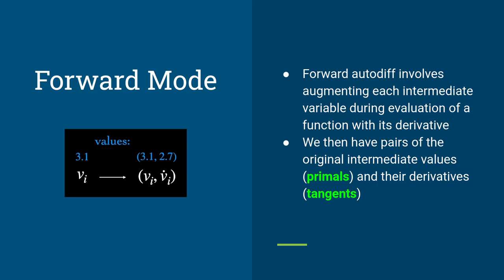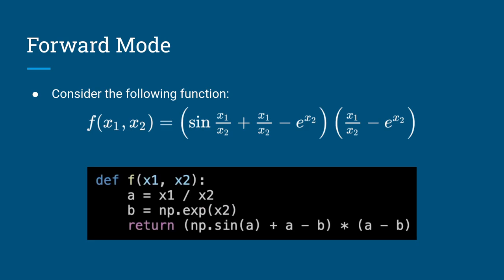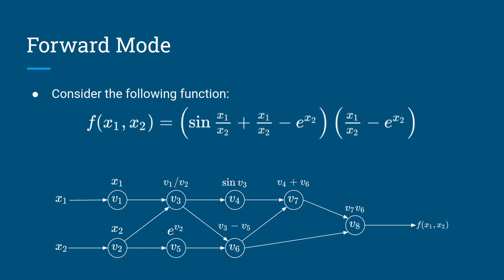The first way to perform automatic differentiation is called forward mode, which basically augments each intermediate variable in the evaluation of a function with its derivative. You call the intermediate variable the primal and the derivative the tangent. For instance, consider a function implemented in Python — you can have intermediate variables such as A and B, which you reuse during evaluation together with some operators. You can represent that in a computational graph, also called a Wengert list, where each node represents each one of the intermediate values needed while evaluating your function.